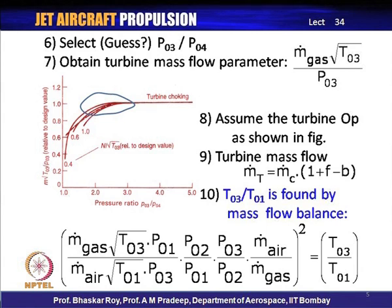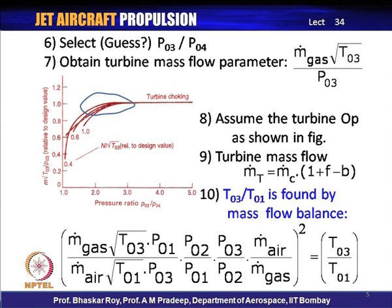From the turbine mass flow obtained from the pressure ratio and from the turbine operating mass flow, we can find T03/T01 using the mass flow balance: m_dot_gas / m_dot_air. Using normalized mass flow parameters and lining up all the pressure ratios operative across the compressor, the turbine, and the combustion chamber — as was done in the last class — we get the turbine pressure ratio that is operative in the engine cycle pressure ratio.